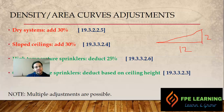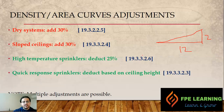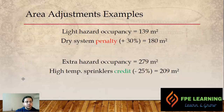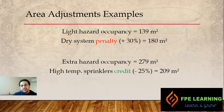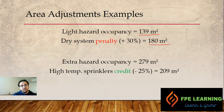Multiple adjustments can be applied together. For example, if we are designing for light hazard occupancy, the graph gives us 139 square meters. If that system is a dry system, we add 30 percent — so our design area becomes not 139 but 180 square meters. This is the area adjustment procedure in action.